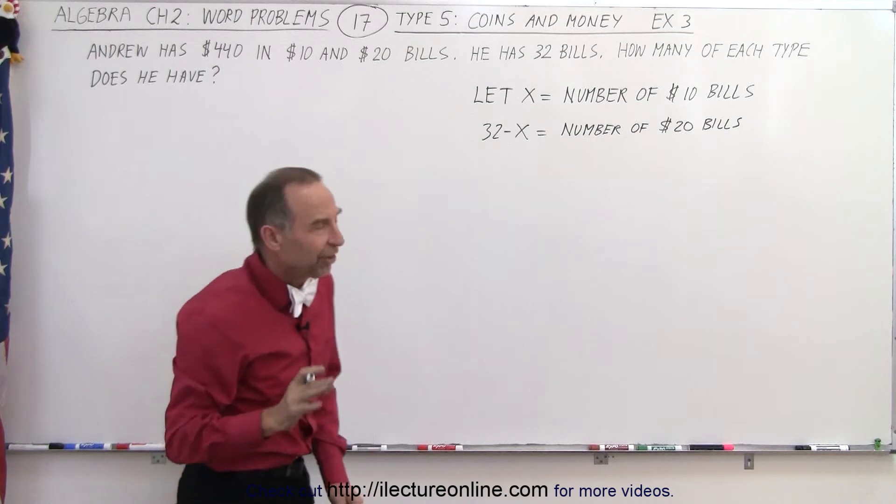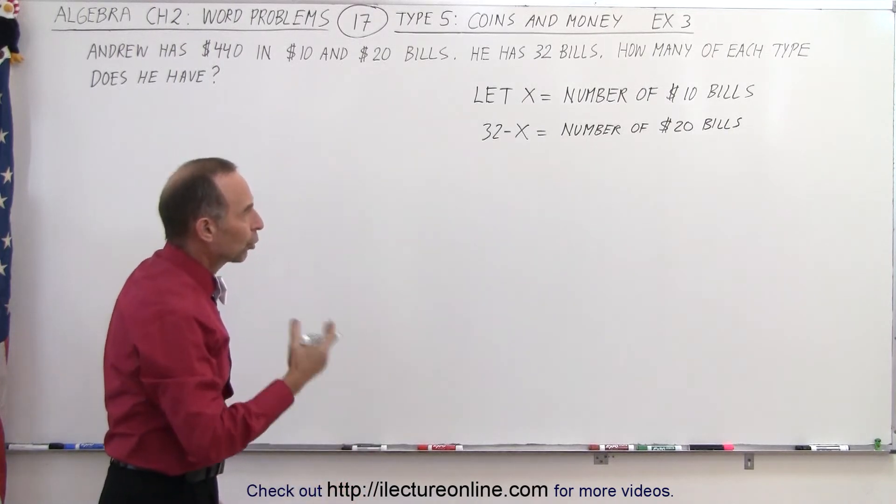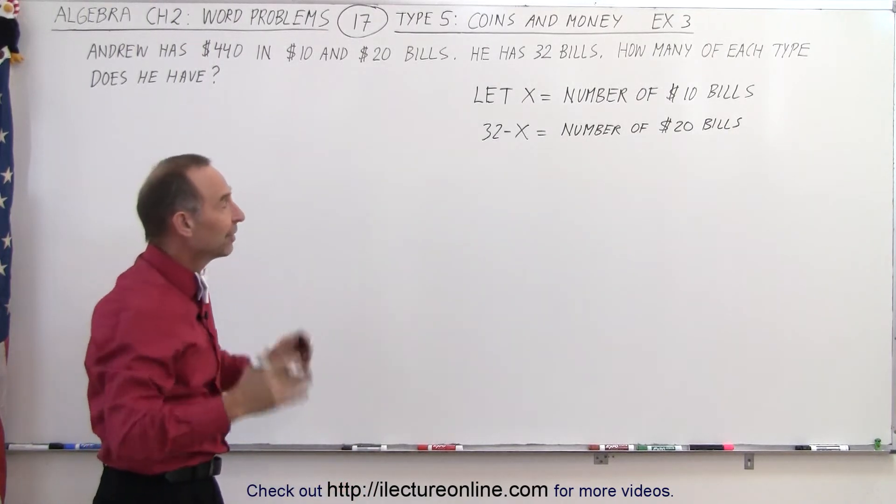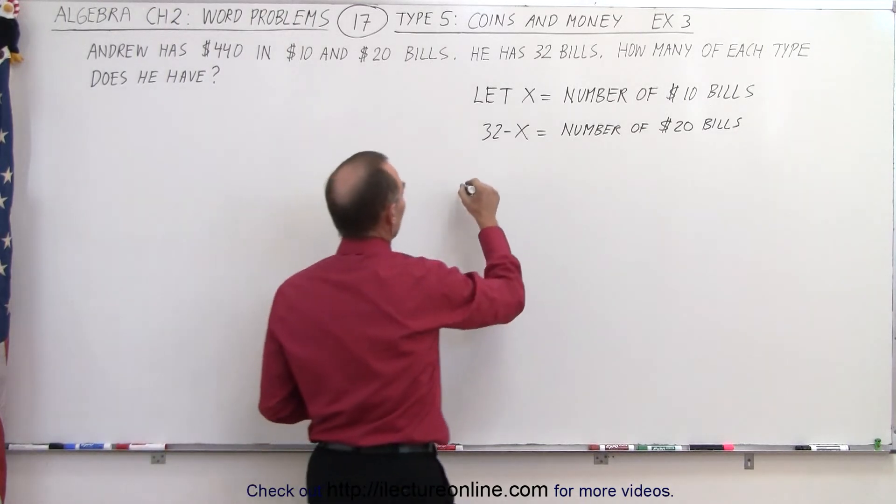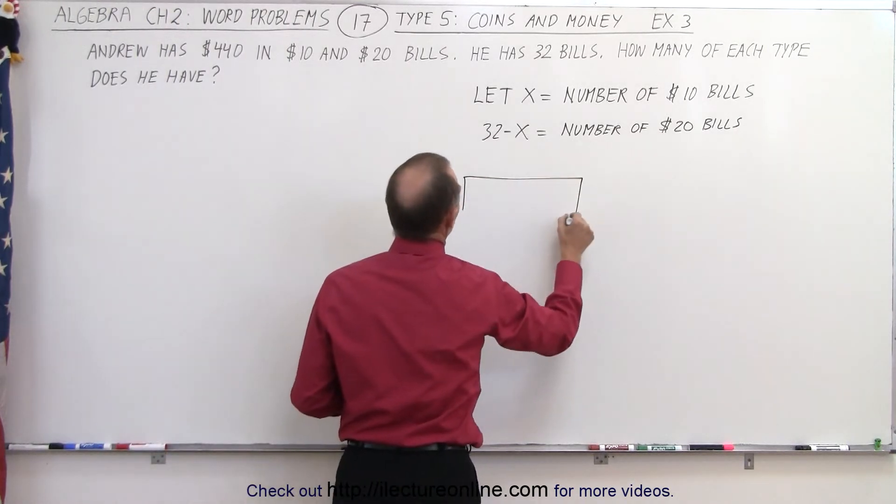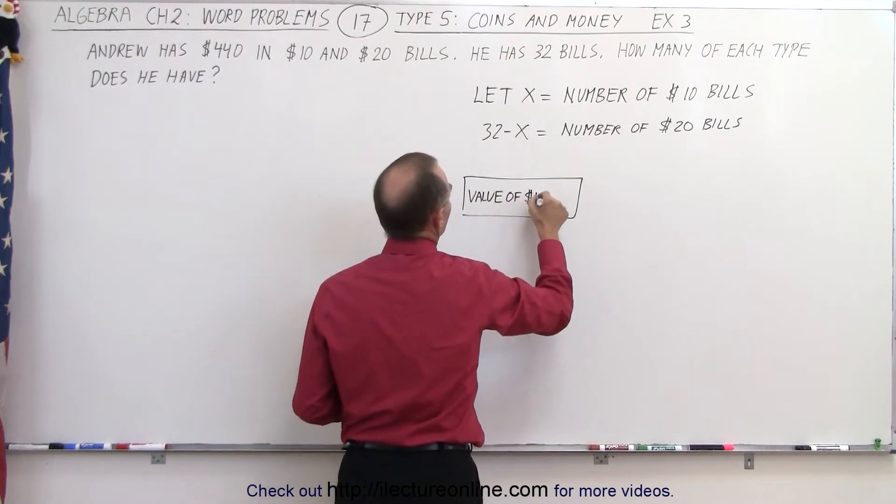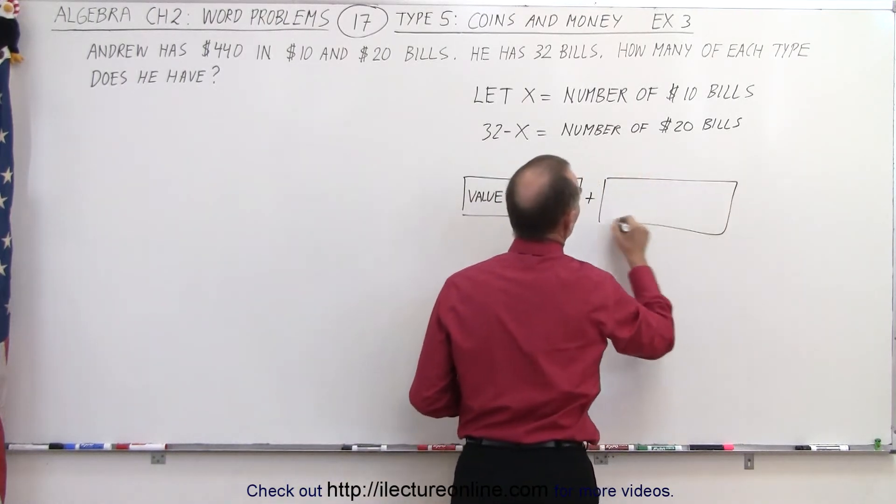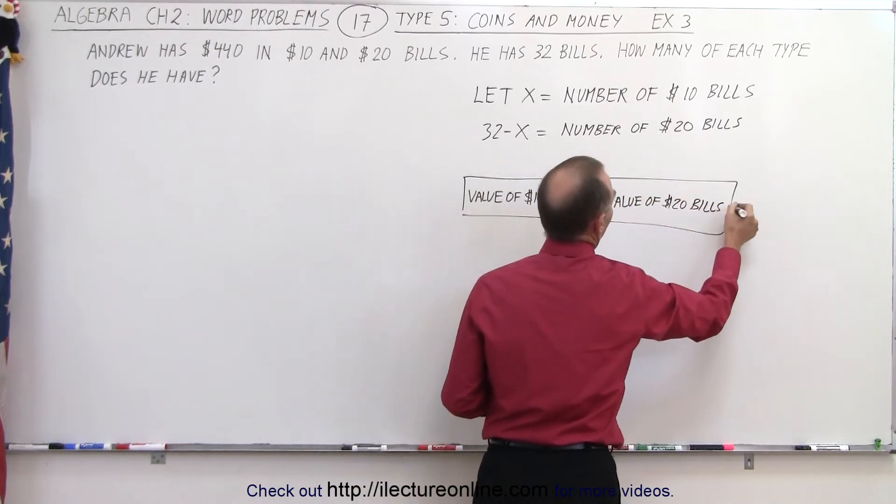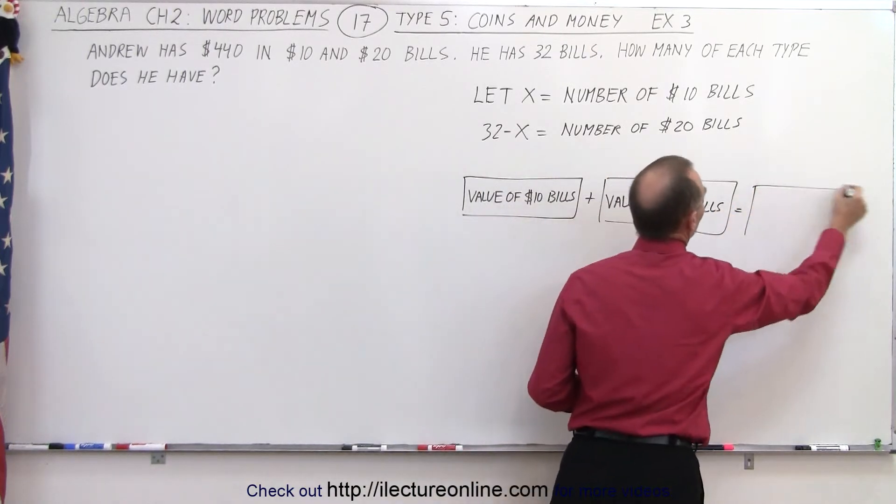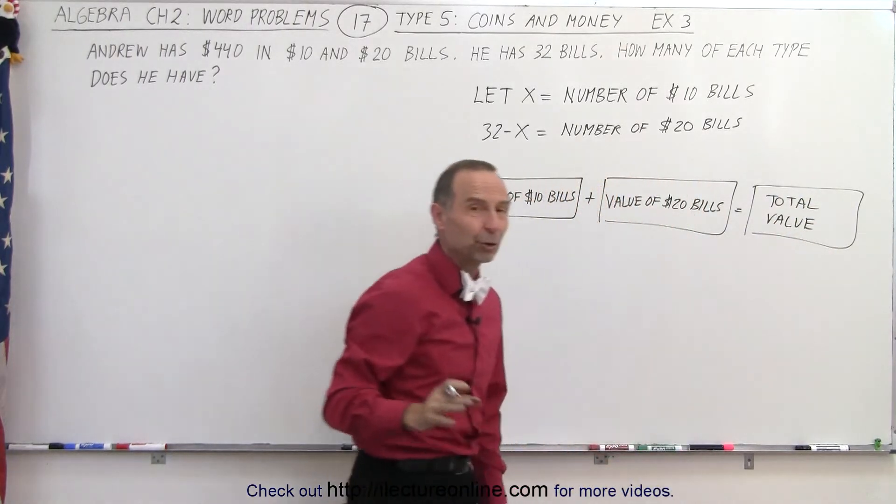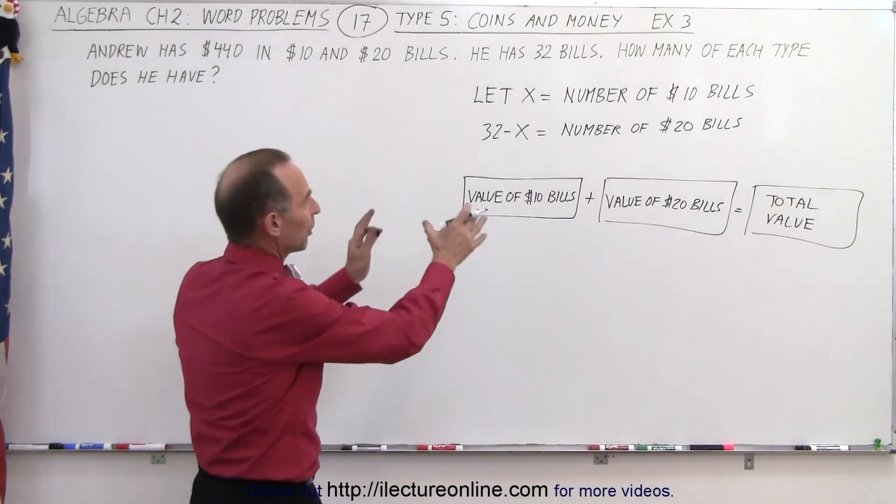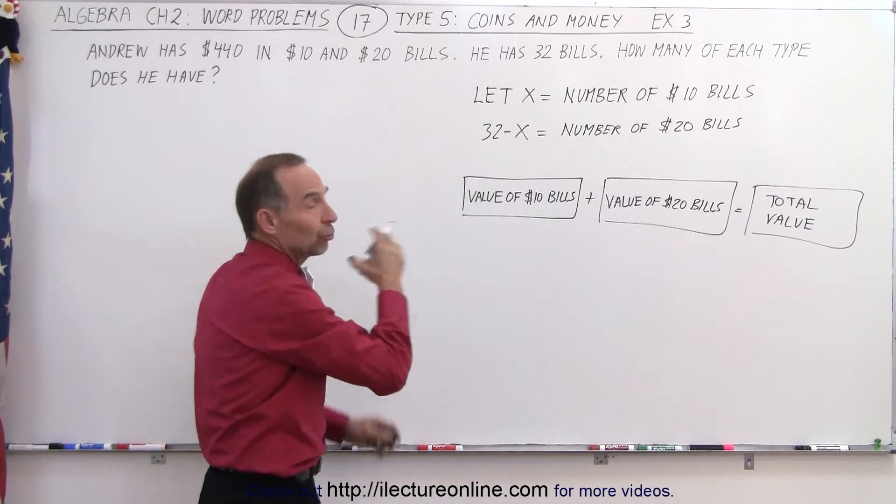From this point on, we solve it the same way we did with the coins. We're going to find the value of each type of bill added together that should add up to the total value. So we take the value of $10 bills, and we add that to the value of $20 bills. And that should add up to the total value of all the bills together. And now we have an equation we can work with once we plug in the equivalent in terms of x.